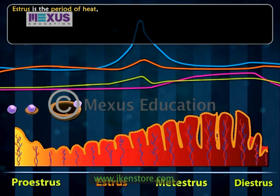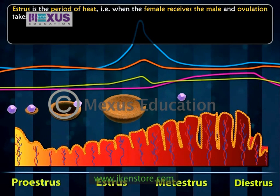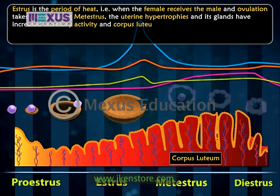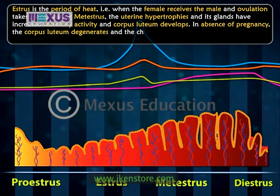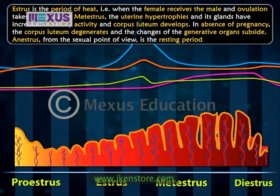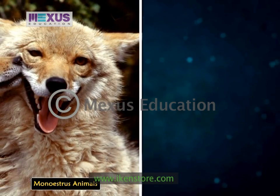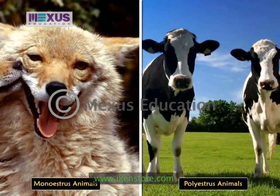Estrus is the period of heat, during which the female receives the male and ovulation takes place. During metestrus, the uterus hypertrophies and its glands have increased secretory activity, and corpus luteum develops. In the absence of pregnancy, the corpus luteum degenerates and the changes of the generative organs subside. Anestrus, from the sexual point of view, is the resting period. In monoestrous animals, it lasts up to the next mating season, whereas in polyestrous animals, the resting interval is short, only up to the next cycle.